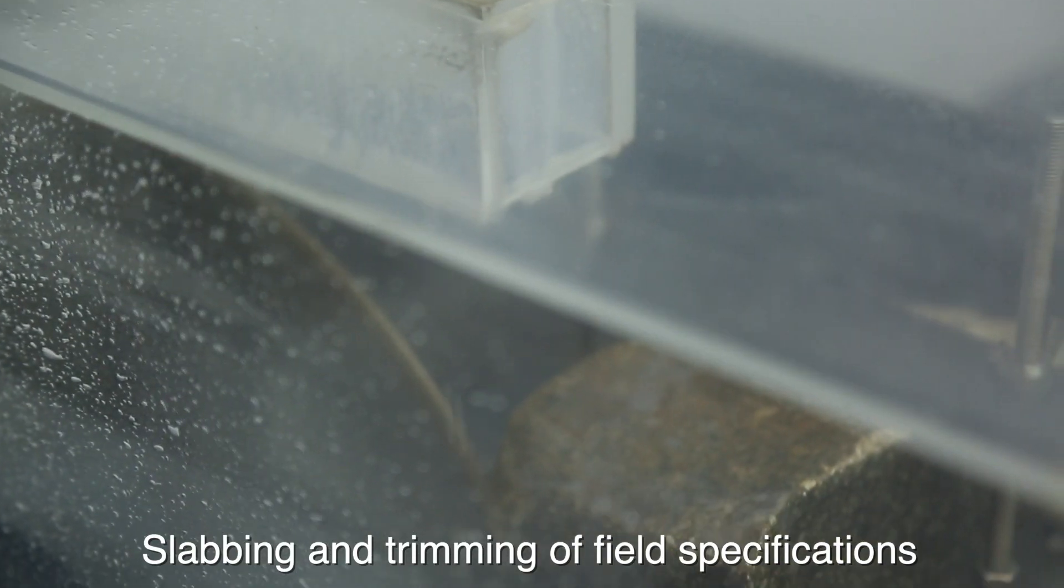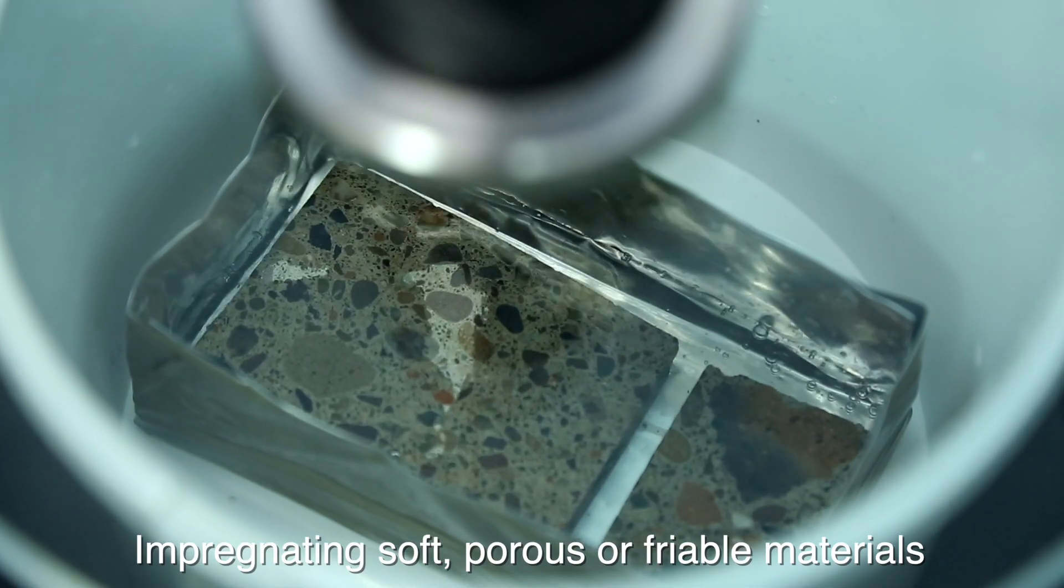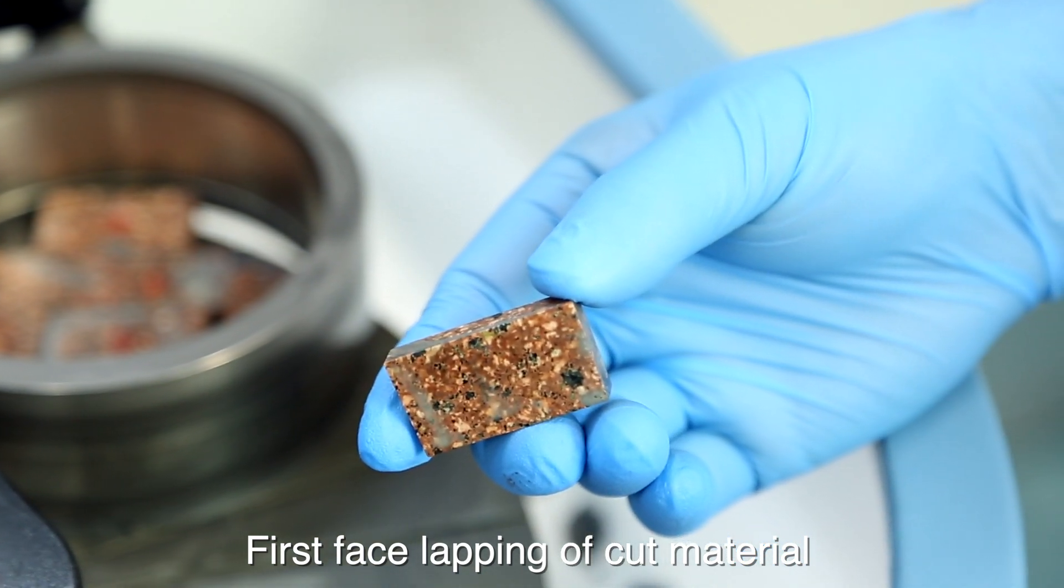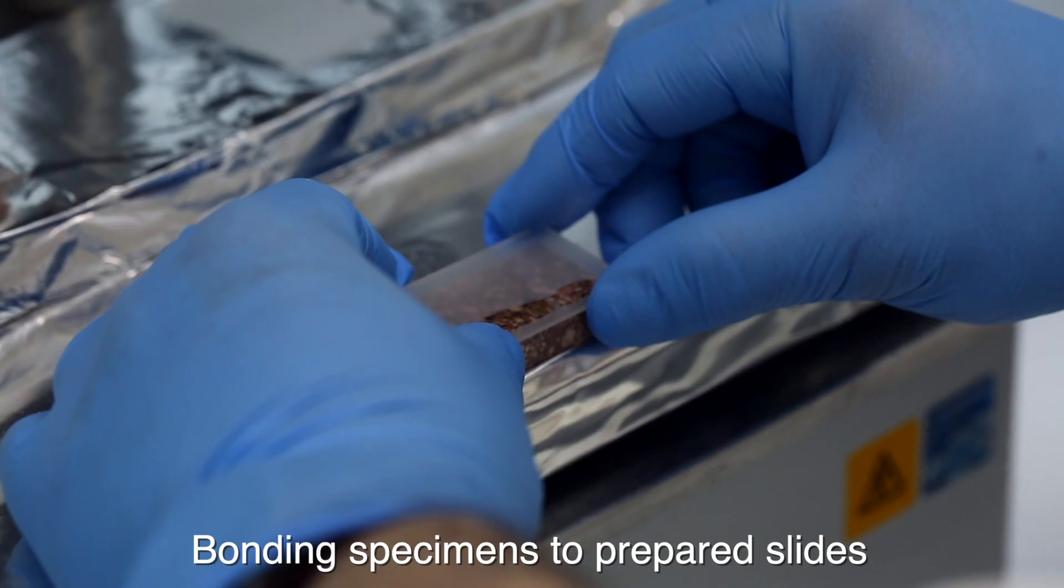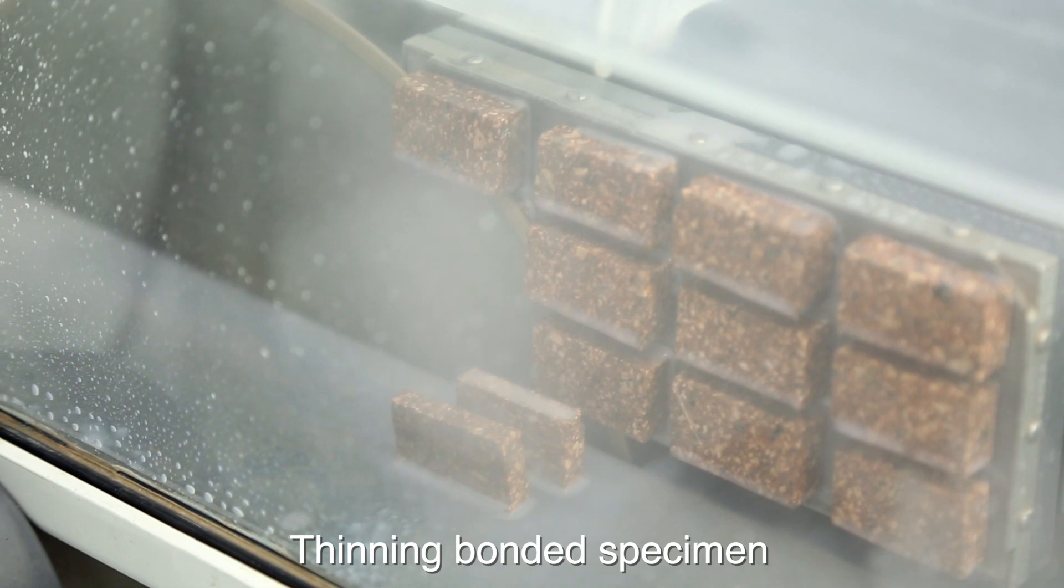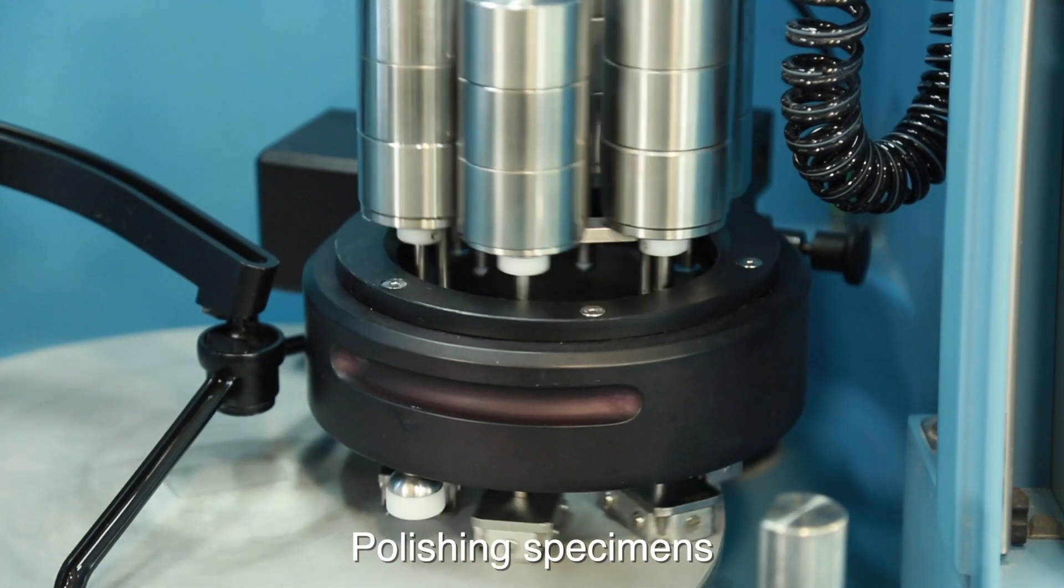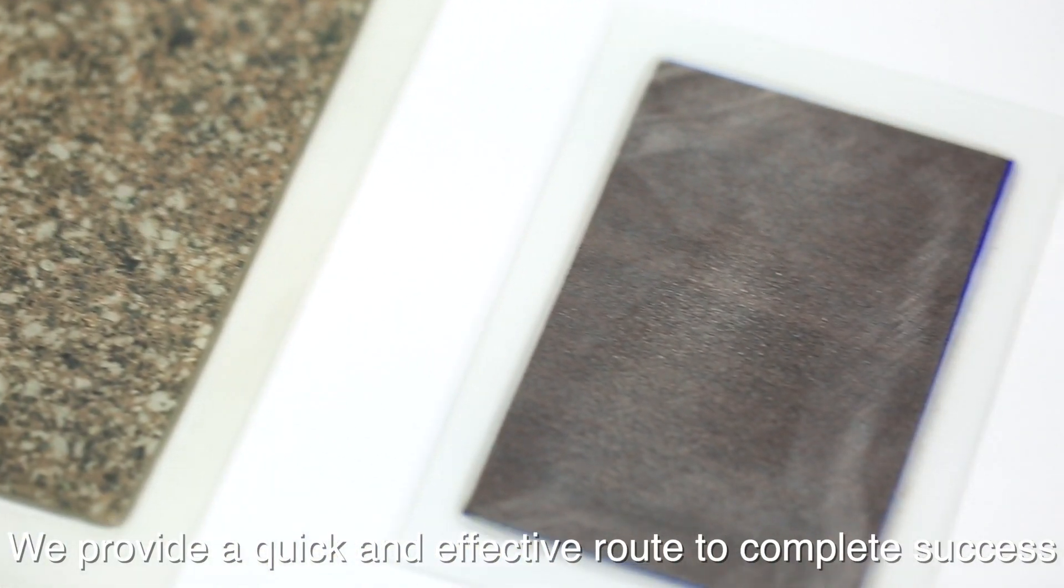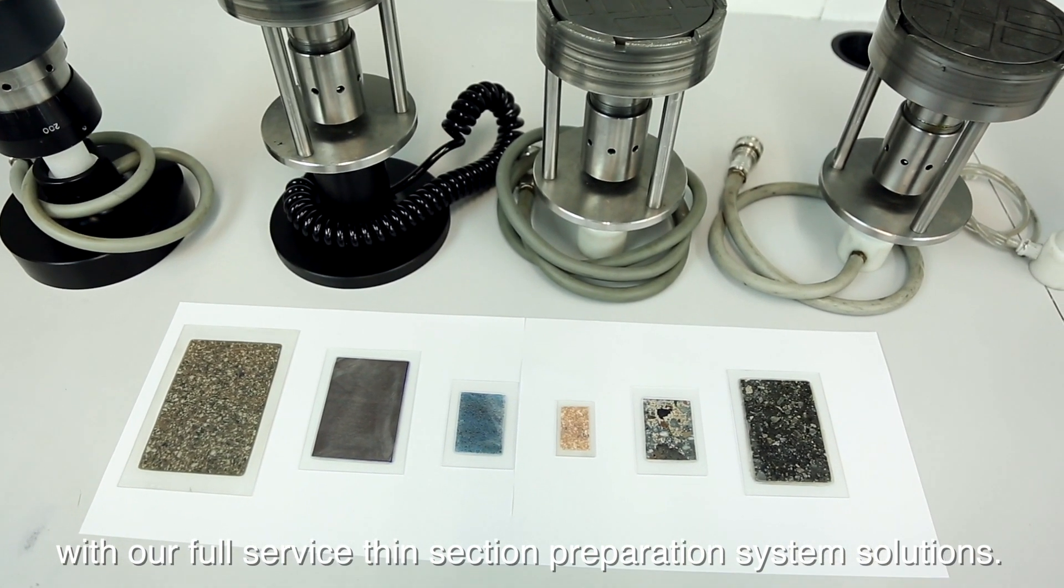Slabbing and trimming of field specifications, impregnating soft, porous or friable materials, first phase lapping of cut material, preparation of slides to uniform thickness, bonding specimens to prepared slides, thinning bonded specimen, lapping specimen to chosen thickness, and polishing specimens. We provide a quick and effective route to complete success with our full-service thin section preparation system solutions.